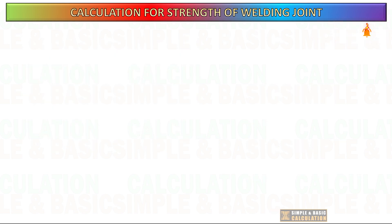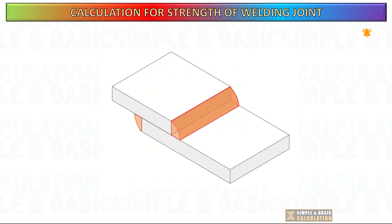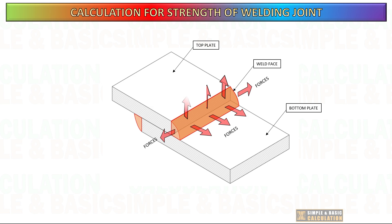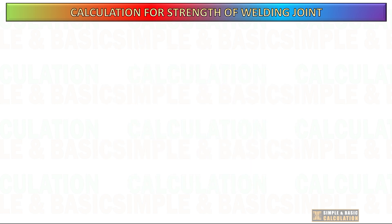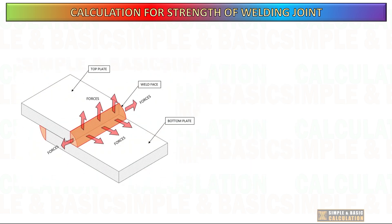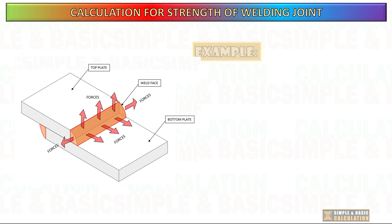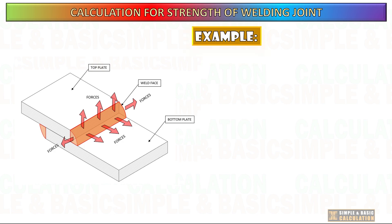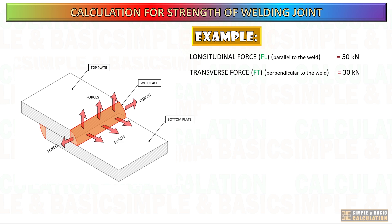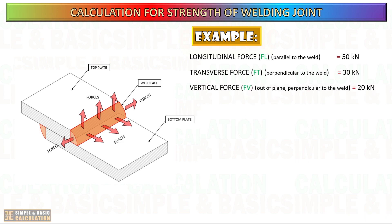Now, consider if there are external forces such as longitudinal, transverse, and vertical accelerations acting on a welded joint. These forces contribute to the overall loading on the weld, making the calculation more complex as we need to consider the combined effect of these forces. Let's assume a fillet weld in a lap joint is subjected to external forces due to longitudinal, transverse, and vertical accelerations.